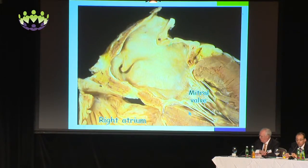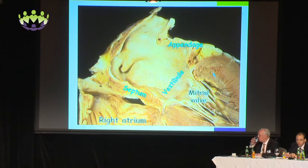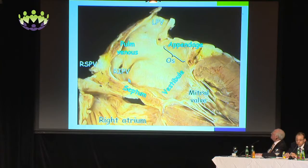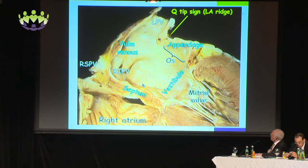We're going to look at the various components of the left atrium: the appendage, the vestibule being the part leading up to the mitral orifice, the septum, and the pulmonary venous component. We also have the os to the appendage and the various pulmonary veins — the right and left pulmonary veins — the right being very near to the plane of the atrial septum.